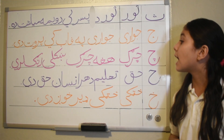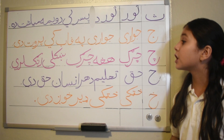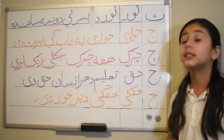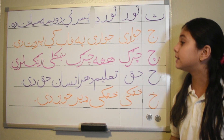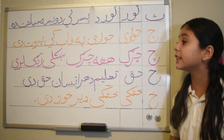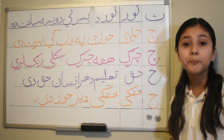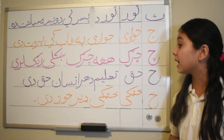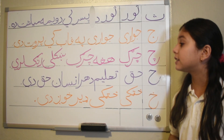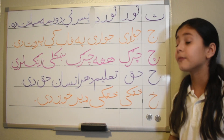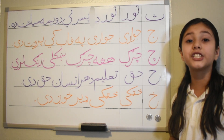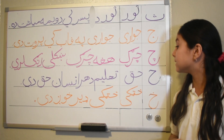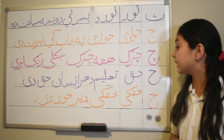The next one is 'Haagam Charg Skule Ranglare,' and that translated is: this chicken has a very pretty color. And the next one is 'Taalim Dahar Insan Haagte,' and that translated is: education is every person's right.